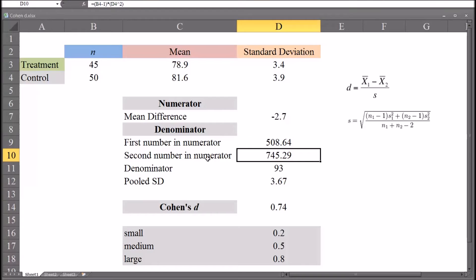Similarly, if we look at the second number in the numerator, we look at that formula. It is the sample size for the control group minus 1 multiplied by the standard deviation squared.